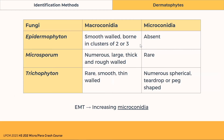Comparing the three common dermatophytes under the microscope, we look at macroconidia and microconidia. Epidermophyton has no microconidia but clustered macroconidia. Microsporum has rare microconidia but many rough-walled, large macroconidia. Trichophyton, on the other hand, has rare macroconidia but abundant microconidia. A good mnemonic is EMT — with increasing microconidia from Epidermophyton (none) to Microsporum (rare) to Trichophyton (abundant).